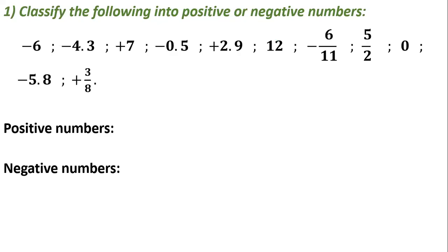Question number one: classify the following into positive or negative numbers. We have signed numbers and we should say which are positive and which are negative. The positive numbers are preceded by a plus or they do not have a sign, so any number without a sign is considered positive. The negative numbers are preceded by a minus, and zero is considered to be both positive and negative.